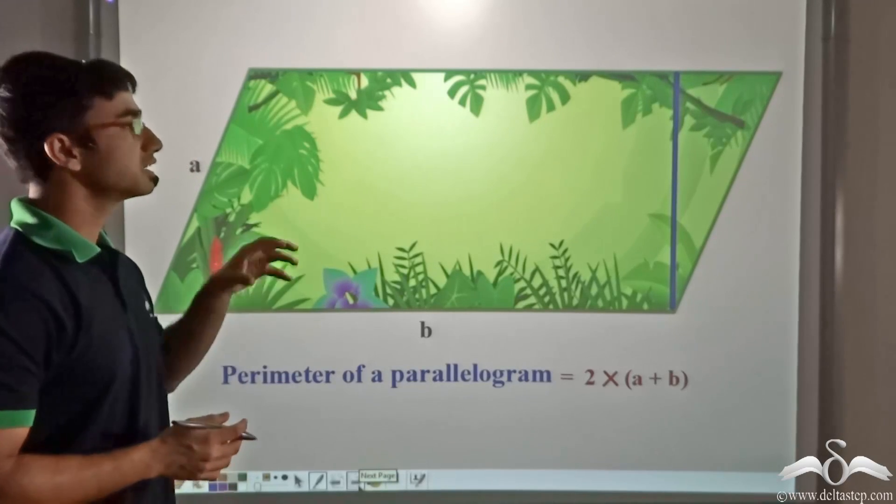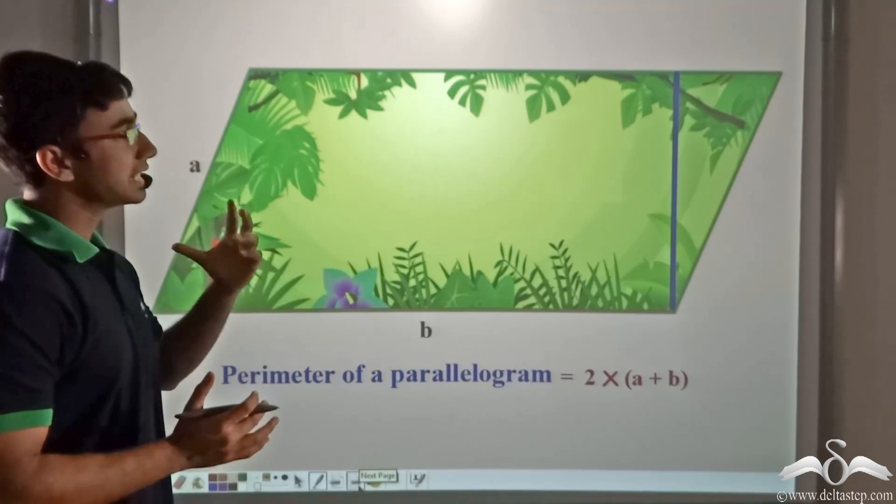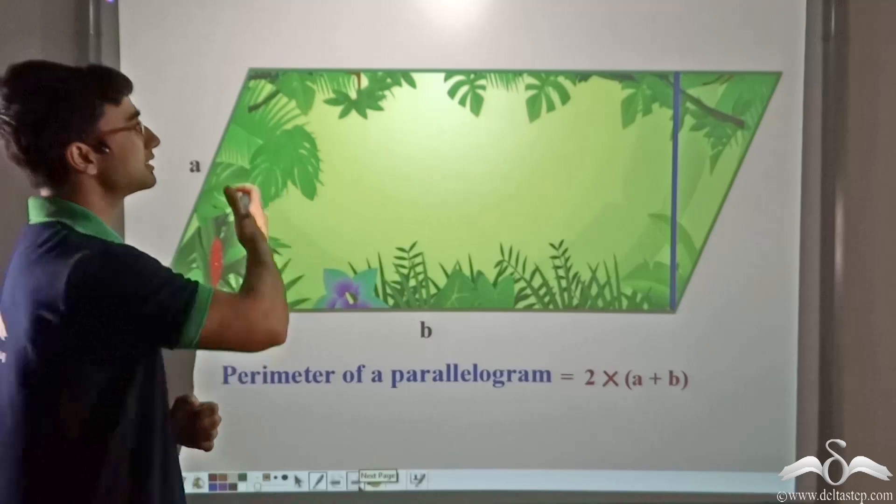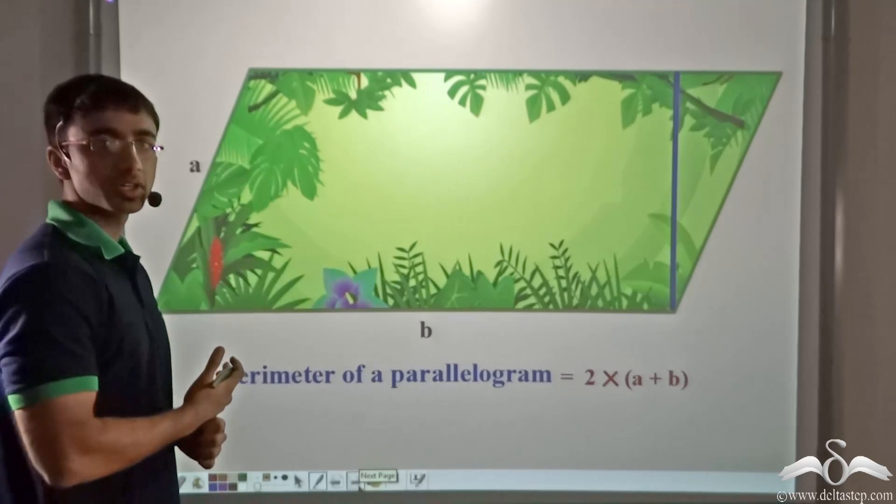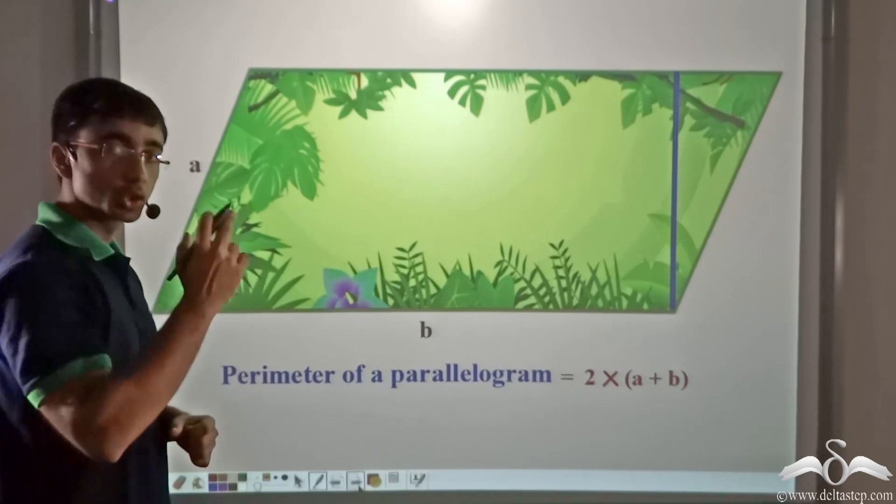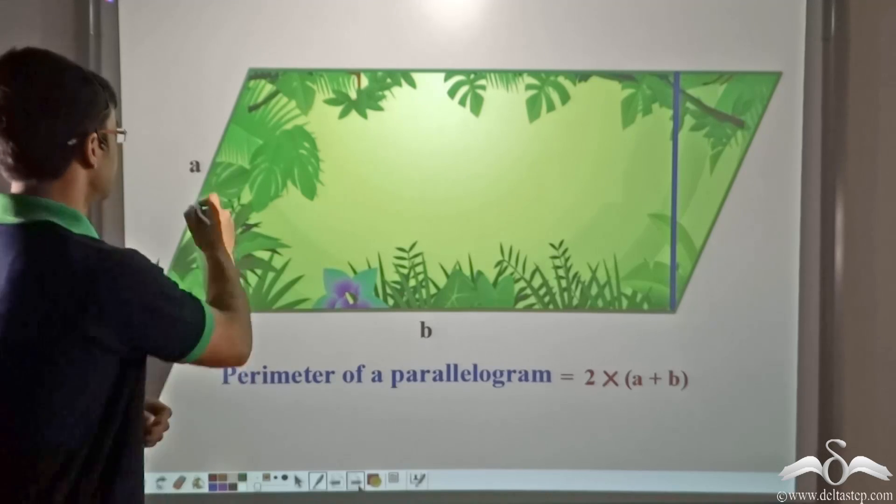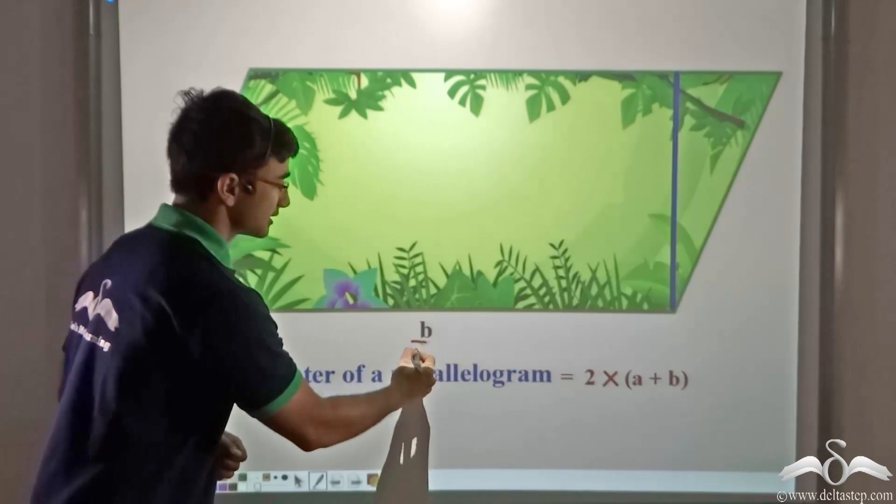So now consider this particular beautiful garden. It has been told to us that this garden is in the shape of a parallelogram and we have been given two sides of the parallelogram, side A and side B.